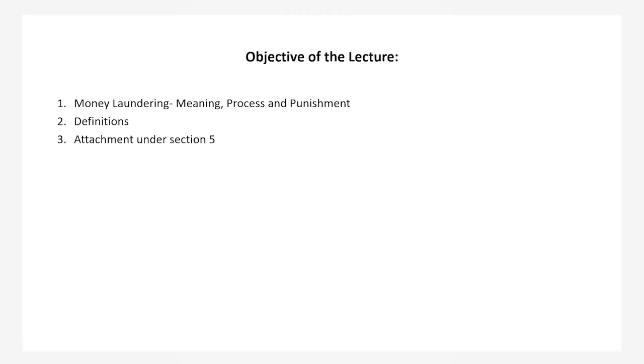I am taking up the course on white collar crimes and in today's session we will be dealing with the Prevention of Money Laundering Act, 2002. This whole lecture series about prevention of money laundering will be divided into three parts. The objectives of today's lecture are: first, the meaning, process and punishment for money laundering; and third, the process of attachment provided under Section 5 of the PMLA Act, 2002.